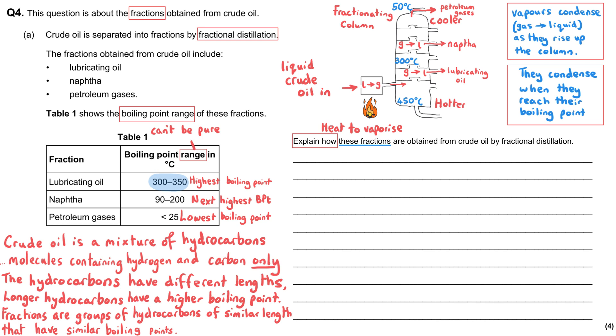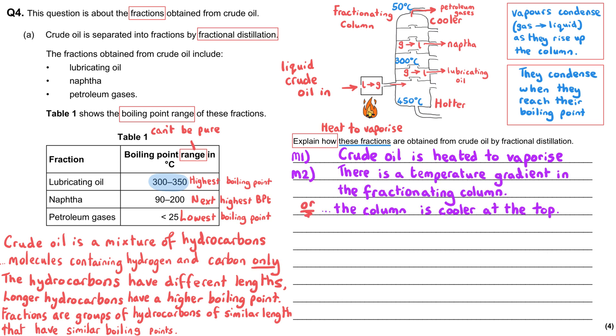So how do we make sure that we get all four of these marks? Well, first of all, we need to say that the crude oil is heated to make it vaporize or to make it evaporate. And then when it enters the fractionating column, it will rise up and it will cool down because it is cooler at the top than it is at the bottom.